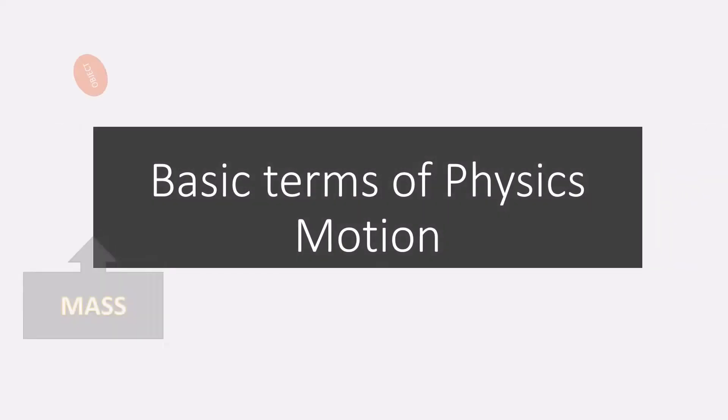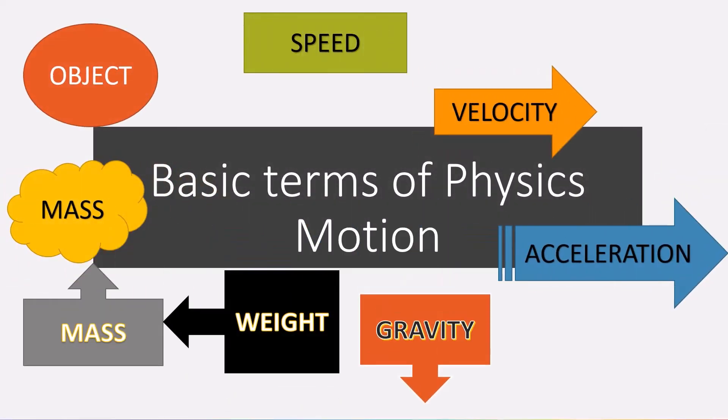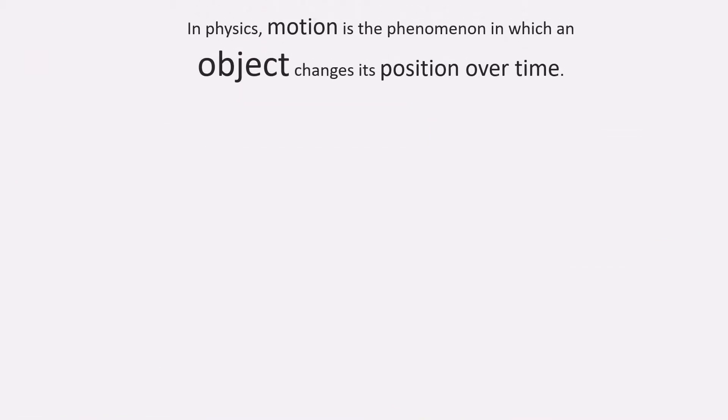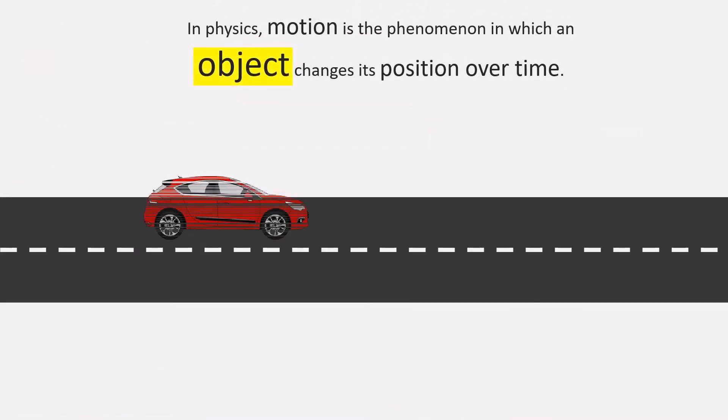Basic Terms of Physics Topic Motion. In physics, motion is the phenomenon in which an object changes its position over time.